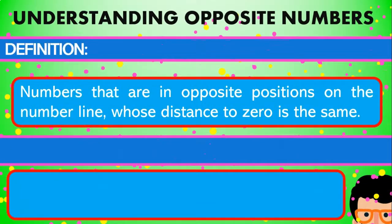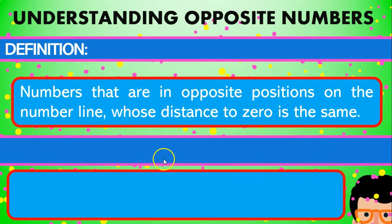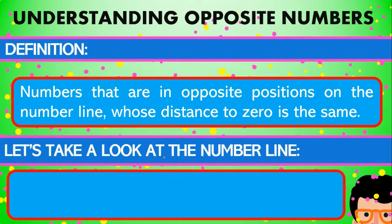But what about opposite numbers? What does that mean? We will learn that in this video. So guys, the first thing we have to know when understanding what are opposite numbers is the definition. The definition of opposite numbers are numbers that are in opposite positions on the number line whose distance to zero is the same. So we have already seen this whenever we talk about absolute value.